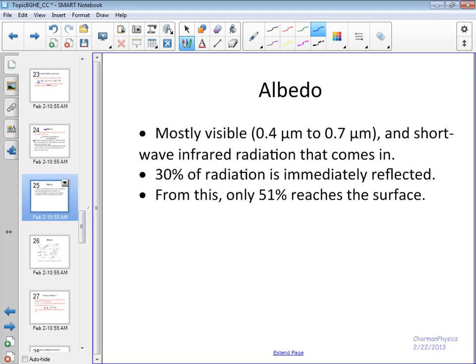Right now we're just worried about albedo and how it relates to reflection. Mostly visible and short-wave infrared radiation is what ends up coming in. So 30% of it is immediately reflected. That's the albedo.